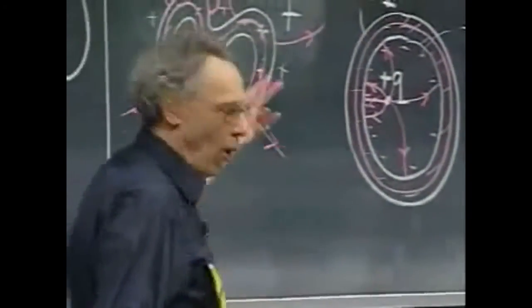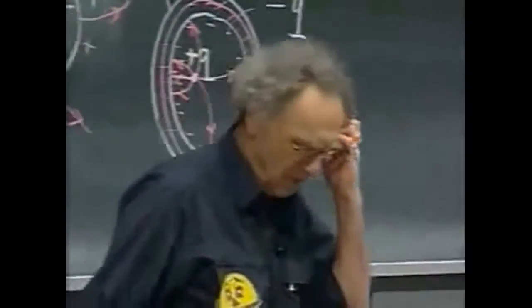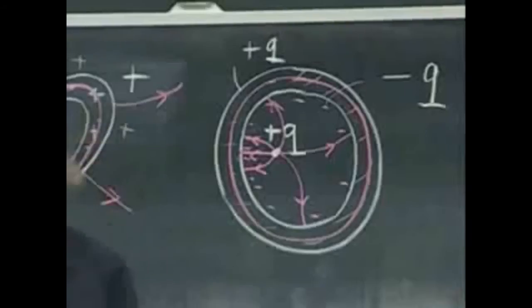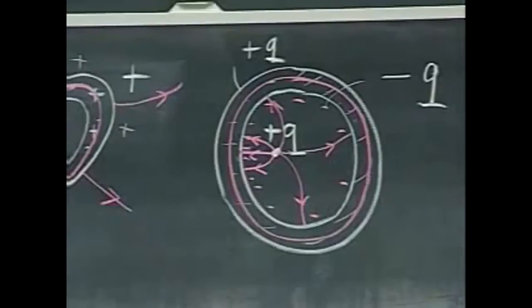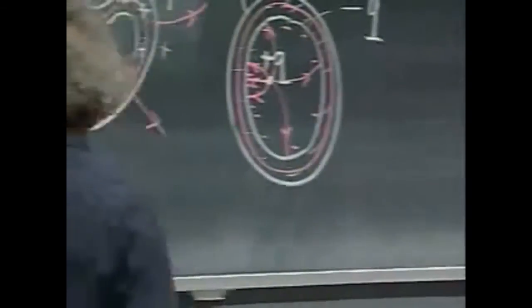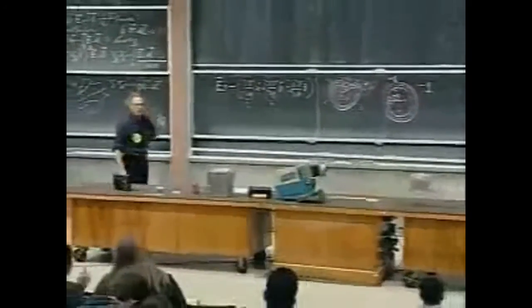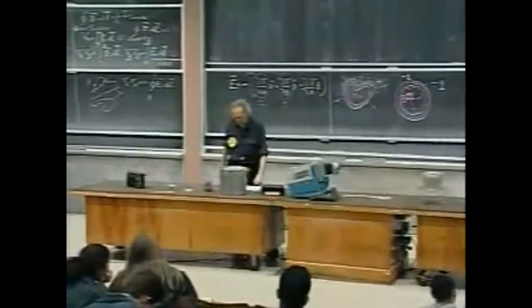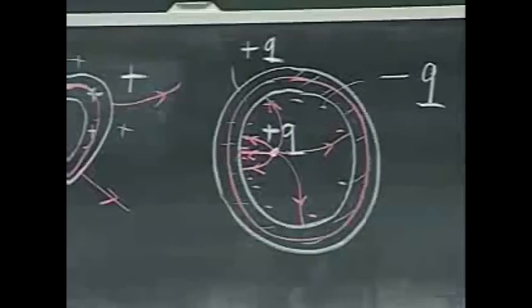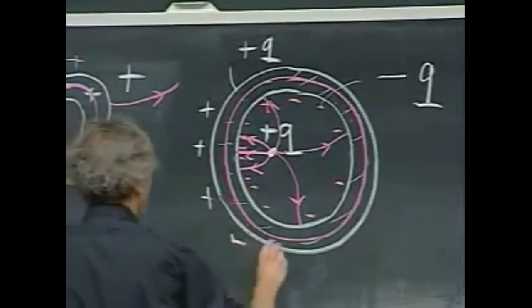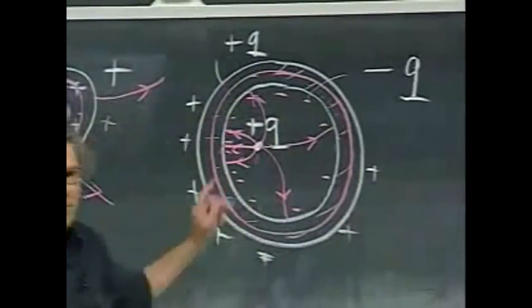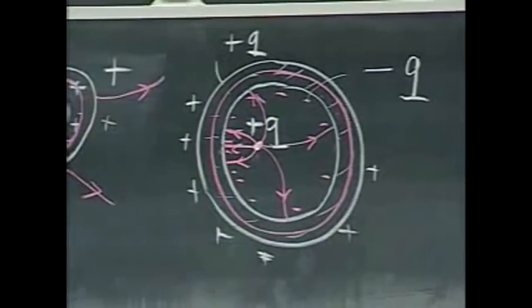Nature must obey all laws of physics. The conductor must become an equipotential. There can be no electric field inside the conductor. Electric field lines have to be everywhere perpendicular to the surface. The closed loop integral of E dot dL must be zero everywhere. And the only way that nature can do that is by making the charge distribution on the surface uniform. That is amazing when you think of that.